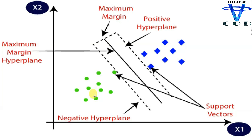On the right side we have the blue class and on the left side we have the green one. In the green class the nearest data point is here, and in the blue class the nearest data point is here. We draw a line through each of these nearest points — these are called support vectors, which is where the name Support Vector Machine comes from.